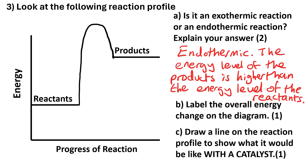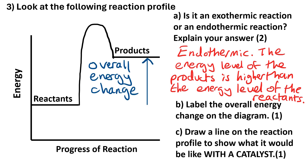Question B: label the overall energy change on the diagram. It's between the reactants level and the products level — make sure you notice the direction of the arrow.